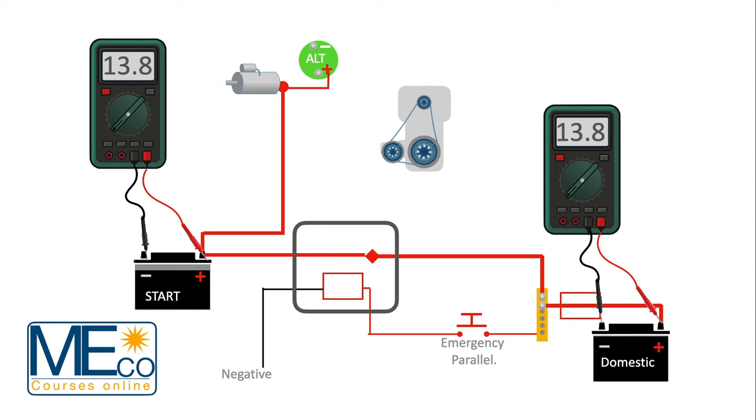Now the start and domestic batteries are charging as one so the smart combiner is now acting like a battery selector switch set to both. Both batteries are charging nicely and the voltage is rising.